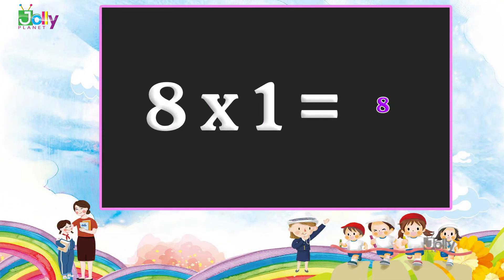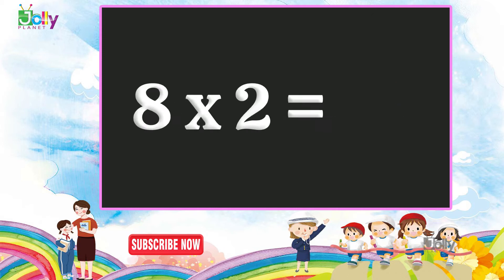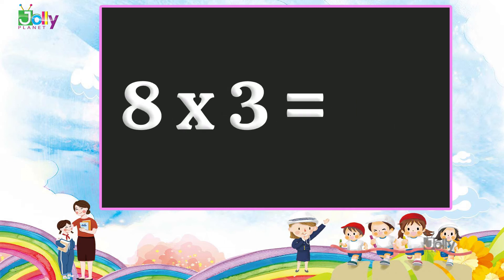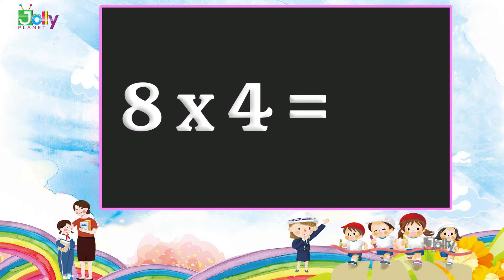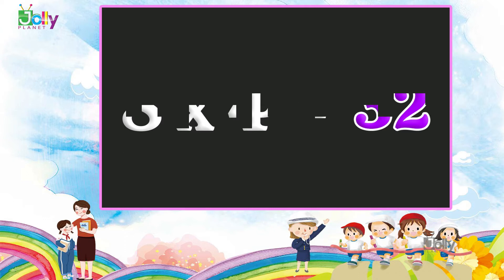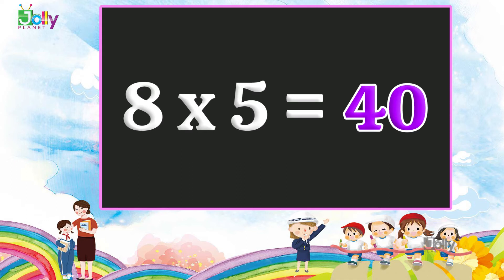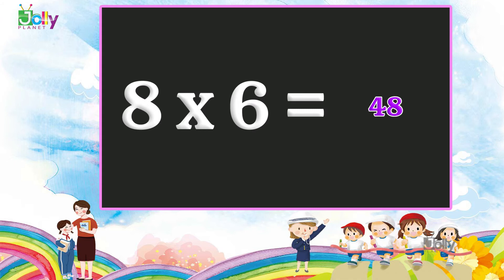Eight ones are eight. Eight twos are sixteen. Eight threes are twenty-four. Eight fours are thirty-two. Eight fives are forty. Eight sixes are forty-eight.